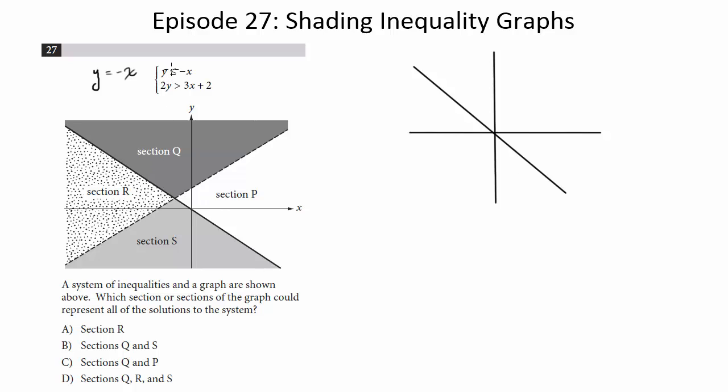So because this is less than or equal to negative x, when it's less than we shade below the line underneath it. That makes the y values less than the values of negative x when you plug in various x's. So I'm just gonna shade this in. So we're gonna shade in all of this.